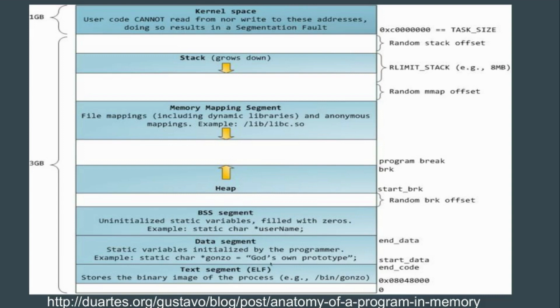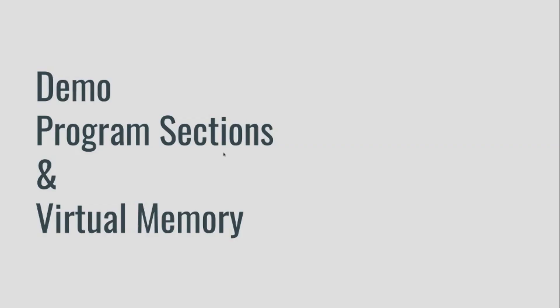After the heap is where we have the components loaded in from your compiled executable or the program you're running. Up here we have the BSS segment, followed by the data segment, followed by the text segment with all your instructions. And that's generally the organization of a process's virtual address space. Next, we'll look at a short demo where we examine these sections inside our compiled simple example, load it into the GNU debugger GDB, and step through it so we can see some of these sections in memory and identify where they're laid out in that process's virtual address space.